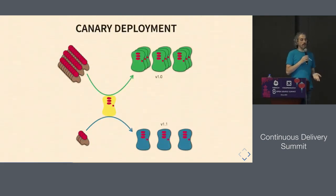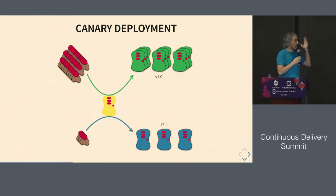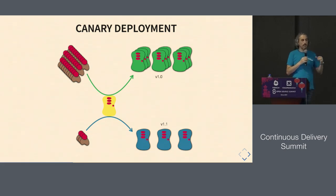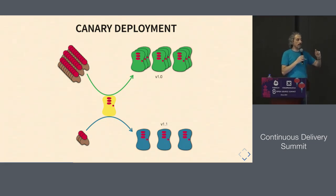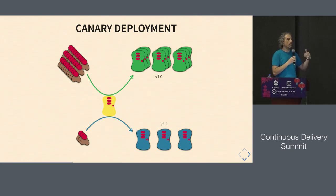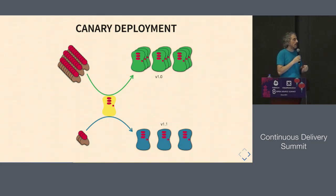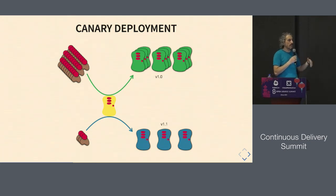Another option is canary deployments. This is something that big companies do — Netflix, Facebook, a lot of companies. Basically, what you do is send a percentage of the traffic to the new version. Same as in blue-green, you have the two versions running at the same time. You start sending a percentage of the traffic to the new version. If that small percentage looks good because you have monitoring and some checks in place, you add more people to the new version. You can do that based on a percentage of users — send 10%, and if everything goes well, send 20%, 30%, and so on.